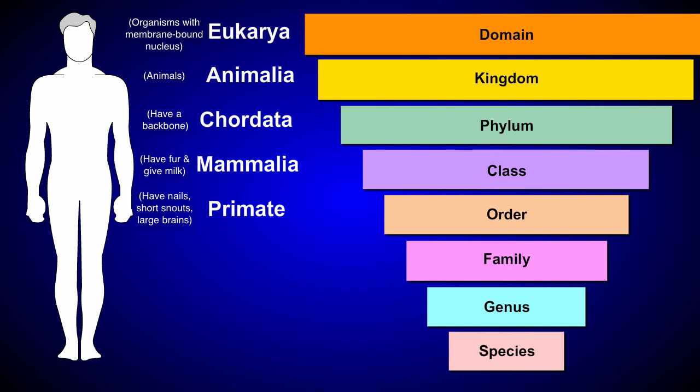Within each order, organisms are grouped further into families. Humans belong to the family called Hominidae, the great apes. Chimpanzees, gorillas, and orangutans are also included in this family, but other monkeys are not.